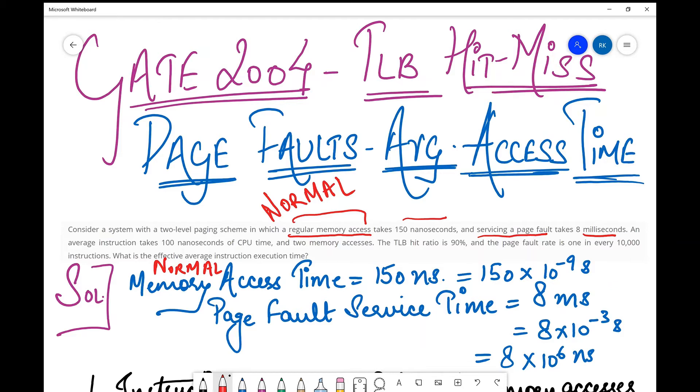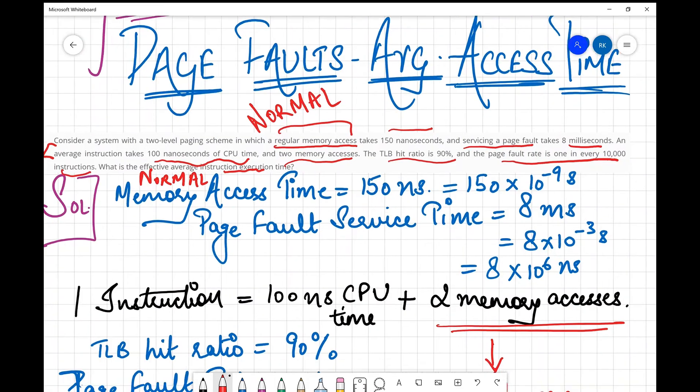They say servicing a page fault takes so and so time, the average instruction takes this much CPU time and two memory accesses. The hit ratio is 90 percent and the page fault is one in every 10,000 instructions. They are asking what is the average instruction execution time. I note down that this is different—they are asking for average instruction execution time.